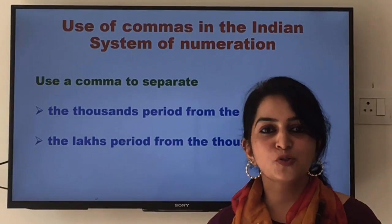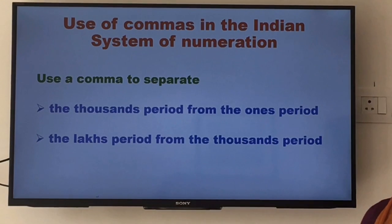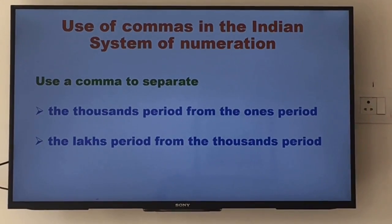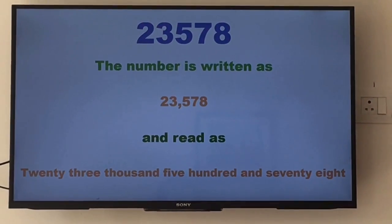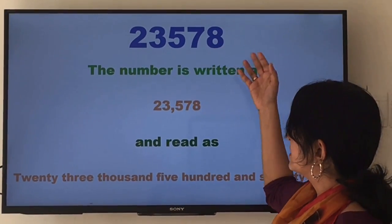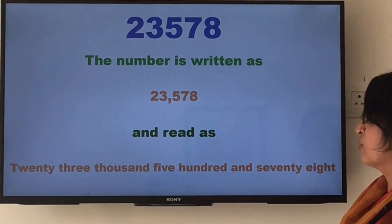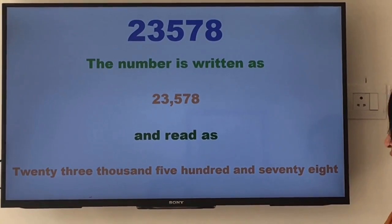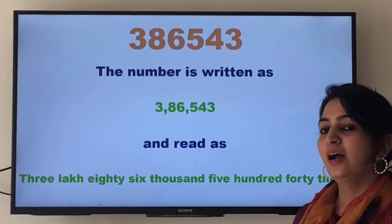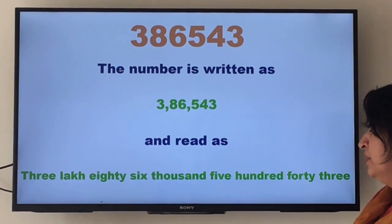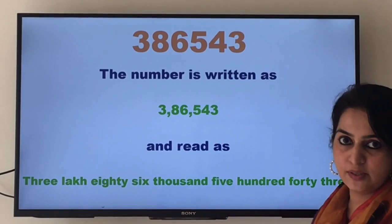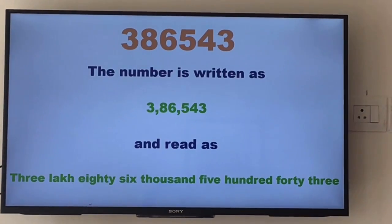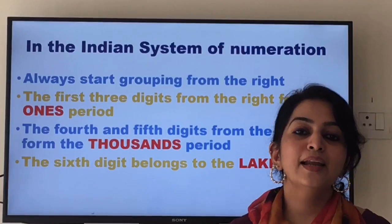Let's see the use of commas in the Indian system of numeration. We use a comma to separate the thousands period from the ones period, and again a comma to separate the lakhs period from the thousands period. For example, 23,578 is a five-digit number — a comma separates the ones and thousands period and we read it as twenty-three thousand, five hundred and seventy-eight. For a six-digit number like 3,86,543, we use commas to separate all three periods and read it as three lakh, eighty-six thousand, five hundred forty-three.